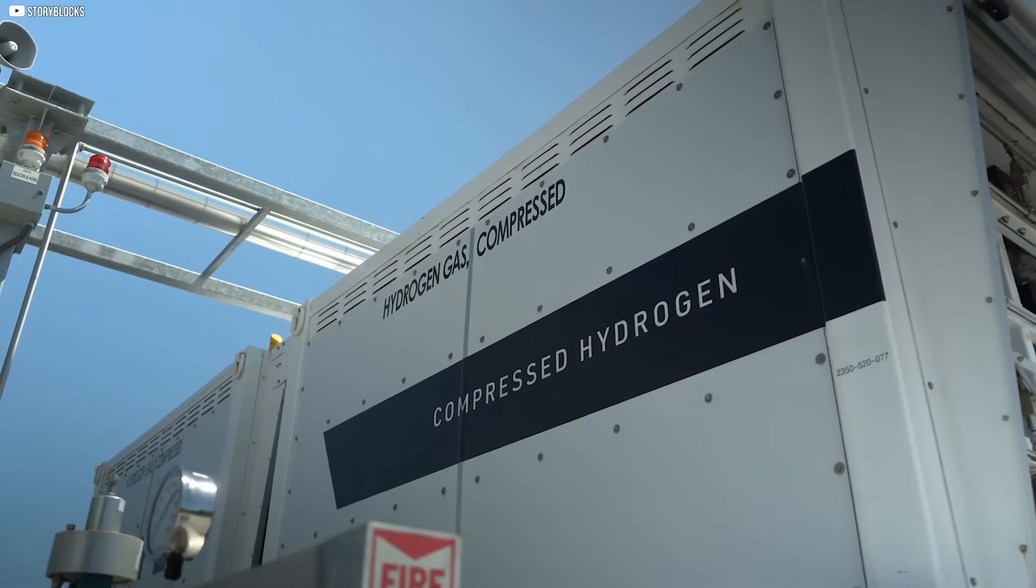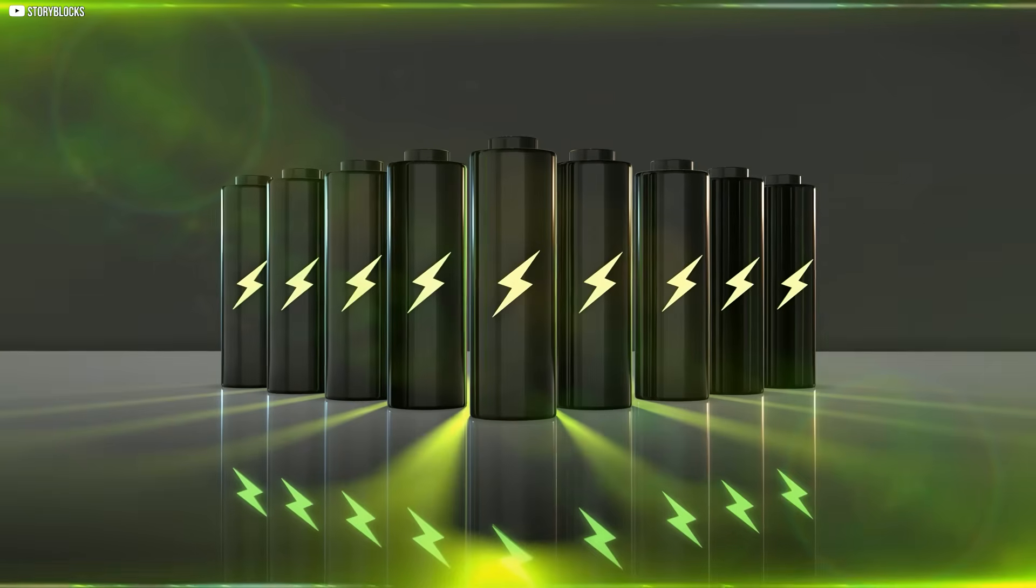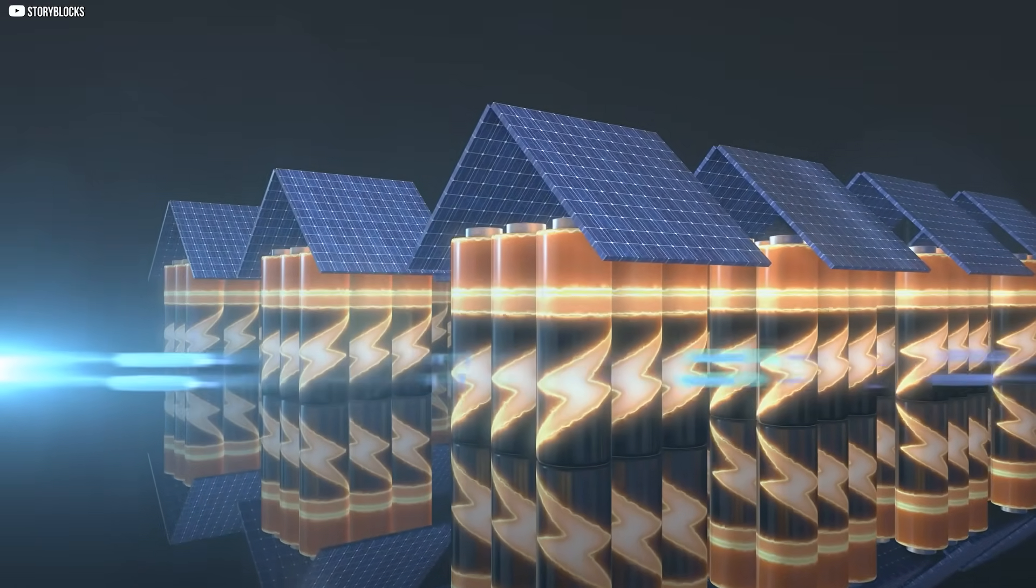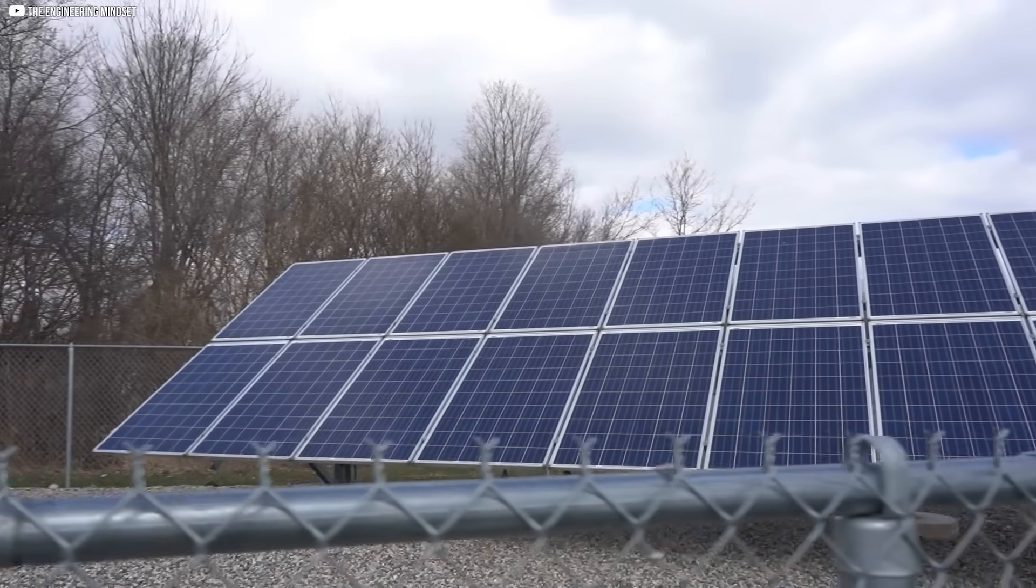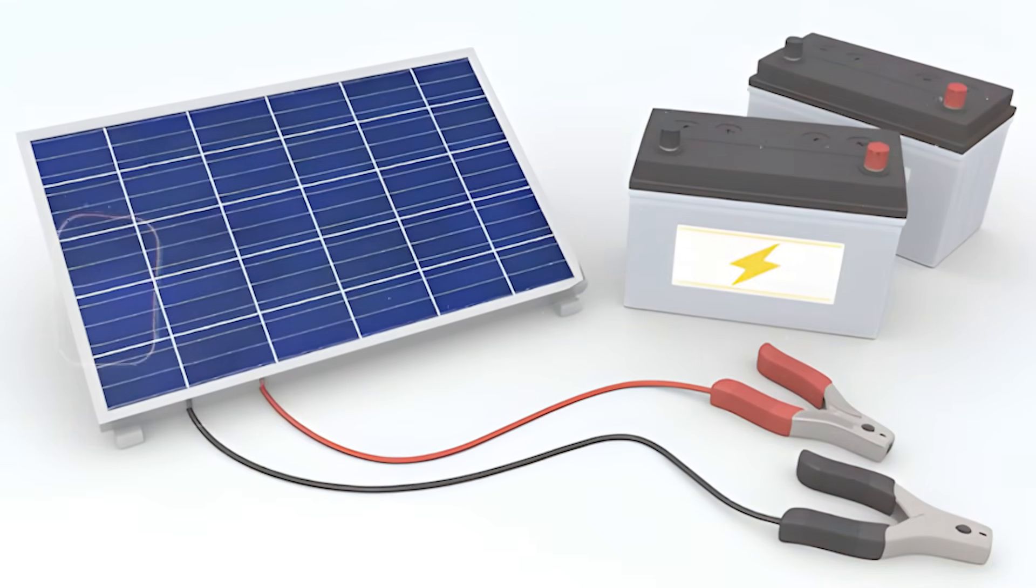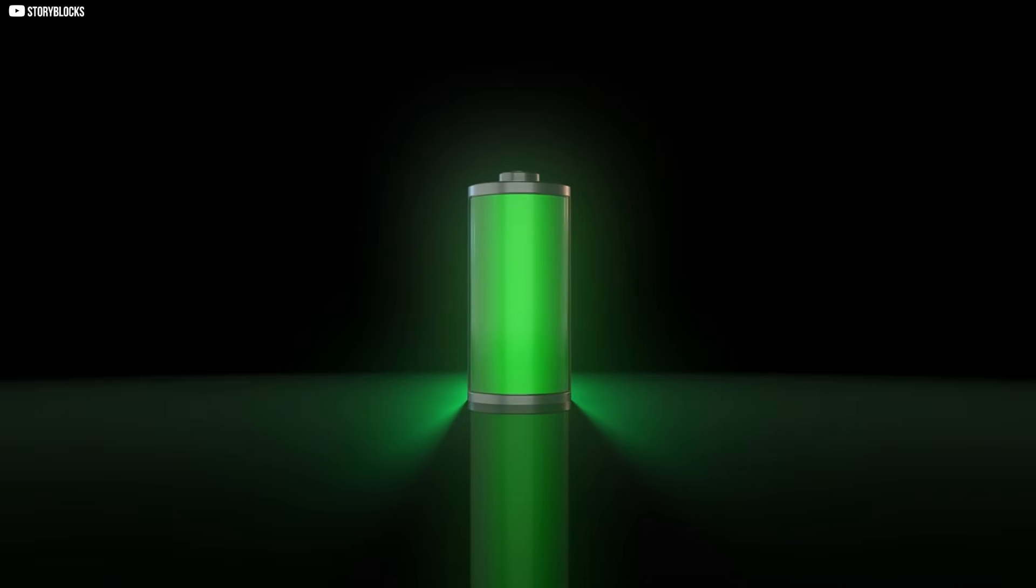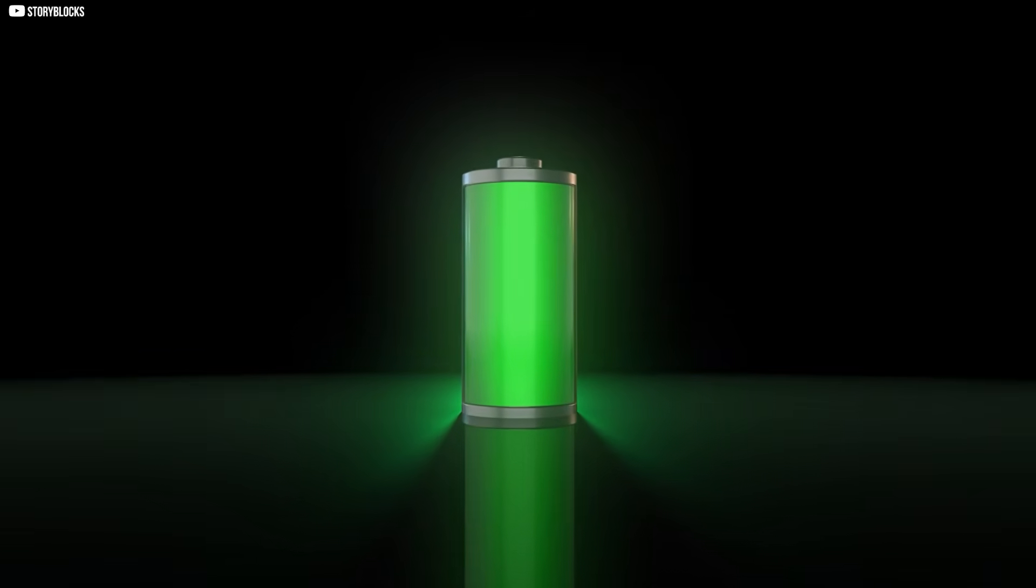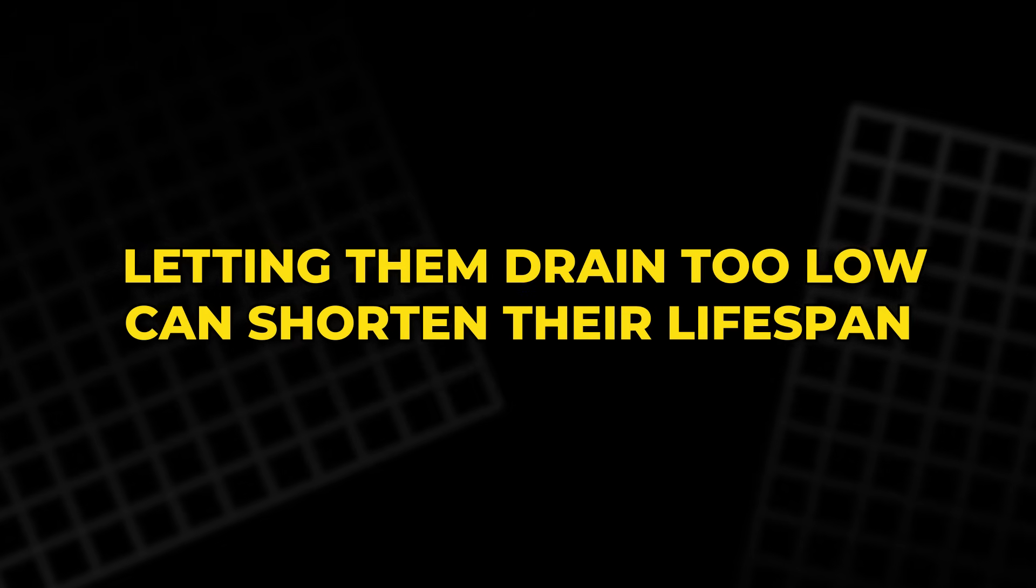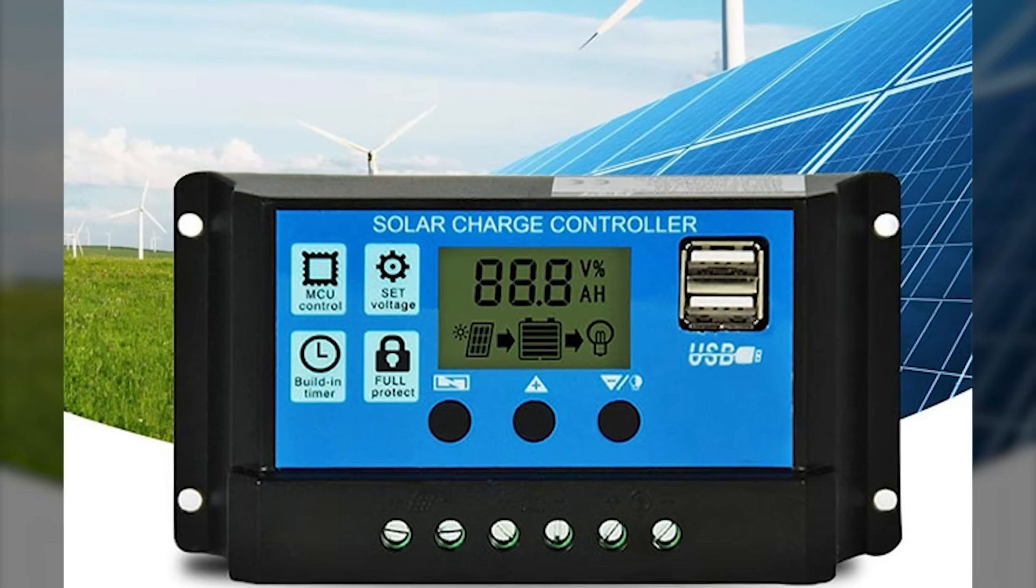If you're not using power right away, you'll need somewhere to store it. That's where batteries come in. The solar panels charge the batteries during the day. Then, at night or during cloudy periods, the stored energy powers your lights, appliances, or other devices. But batteries have limits. Overcharging can damage them. Letting them drain too low can shorten their lifespan.